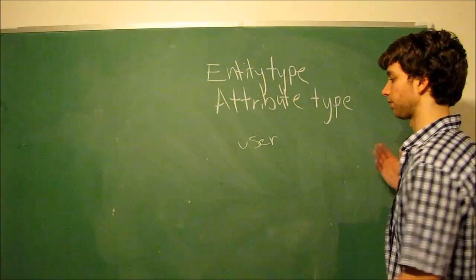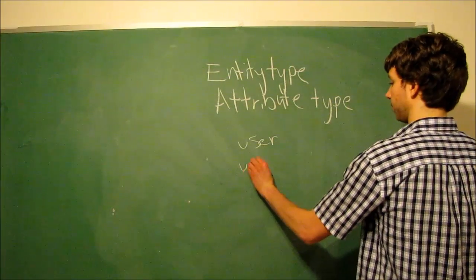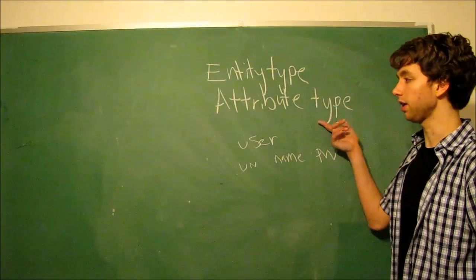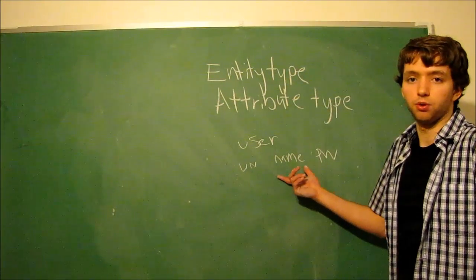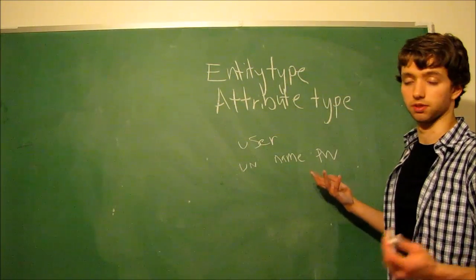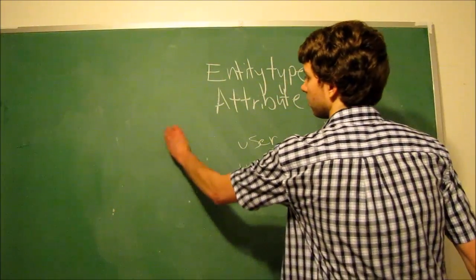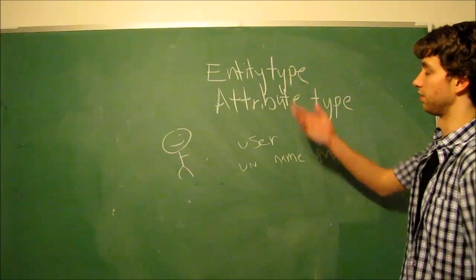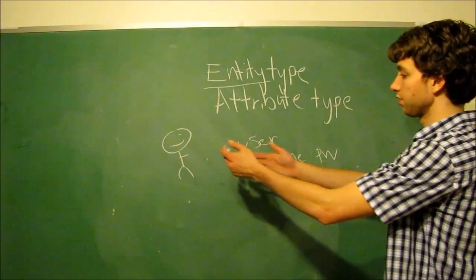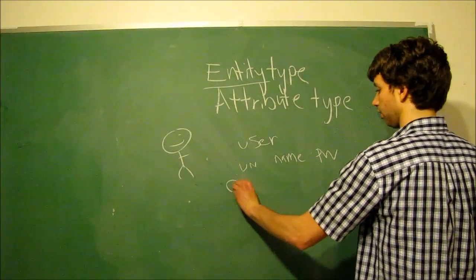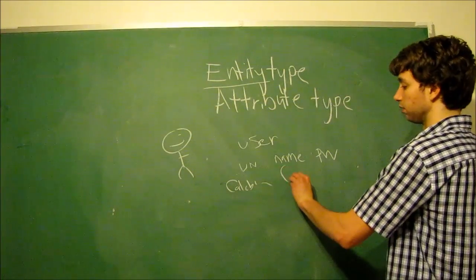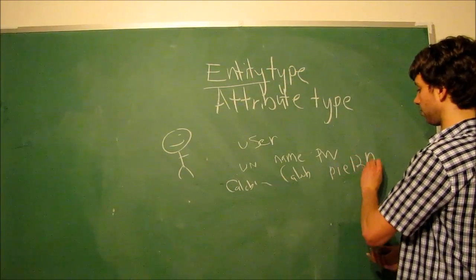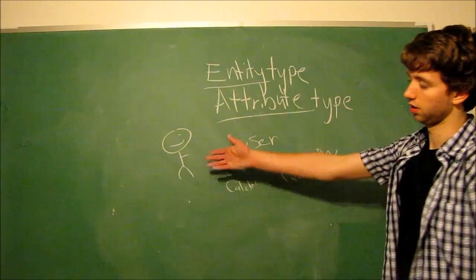The attribute type is basically the categories of attributes. So we had the username. We had the name. We had the password. These are attribute types, because we don't actually have a specific value. Like, no one's name is name. When we actually give these specific values, they no longer become types, and they become specific examples. So this guy over here, here's our entity. We can store attributes about this entity. The username can be Caleb Curry. The name can be Caleb. And the password can be Pi123. So these are specific attributes about that guy.